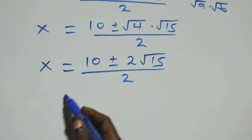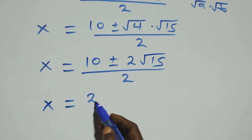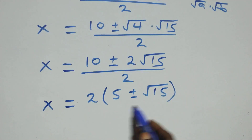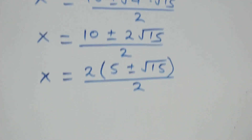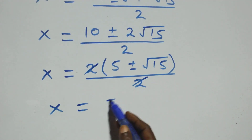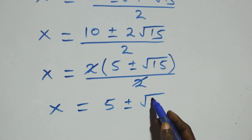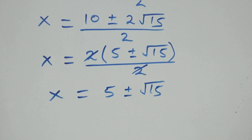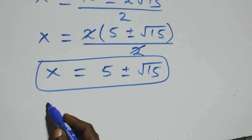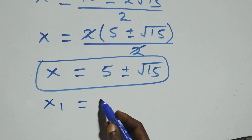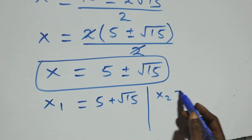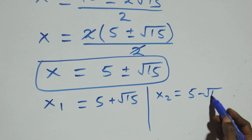Here we have two common factors. Factoring out 2, we get x equals 2 times (5 plus or minus root 15) over 2. The two's cancel each other, leaving x equals 5 plus or minus root 15. So we have two possible values of x: x equals 5 plus root 15, and x equals 5 minus root 15.